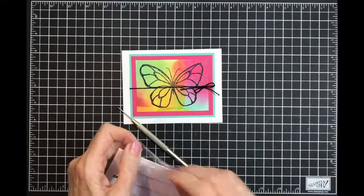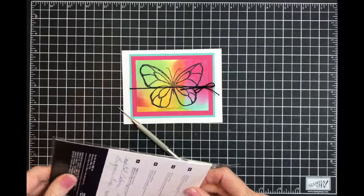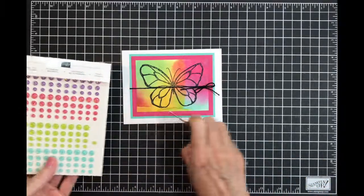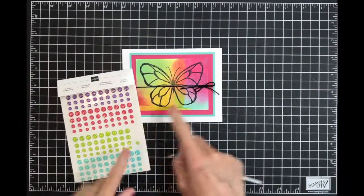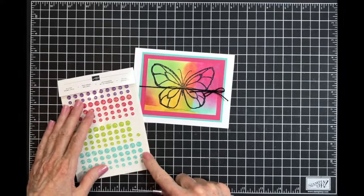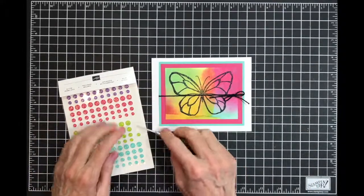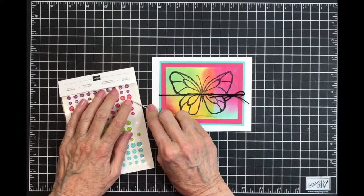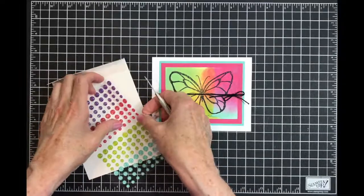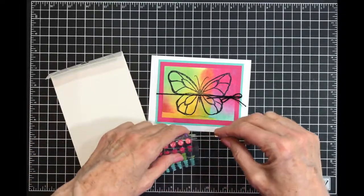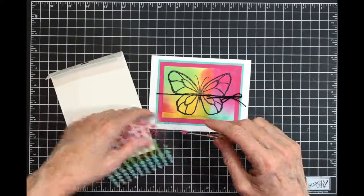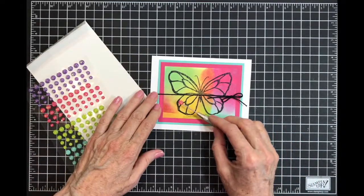All right, now that we have our ribbon on, it's time for some glitter dots. I wish we had these in other colors. I am just such a glitter freak. This is melon mambo and this is coastal cabana. So I'm going to take a large melon mambo. Sometimes it's best if you pick this up and bend it, get your pokey tool underneath.